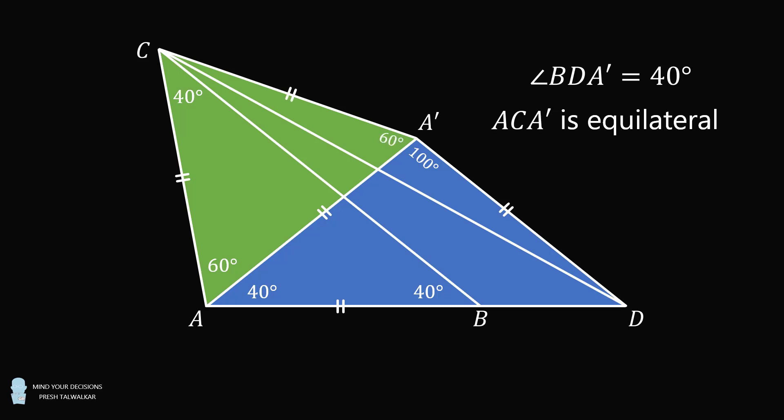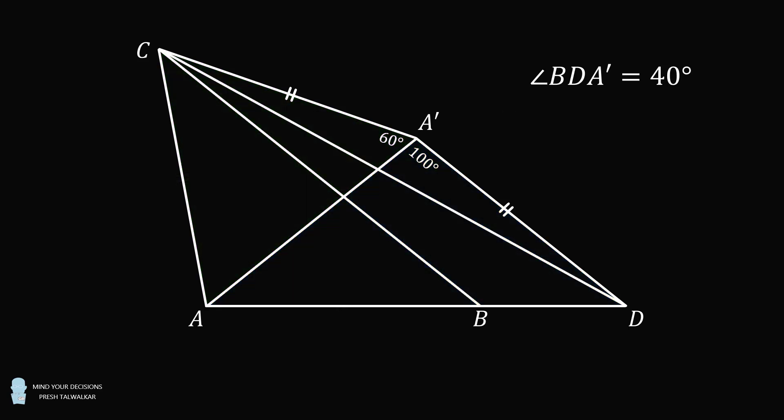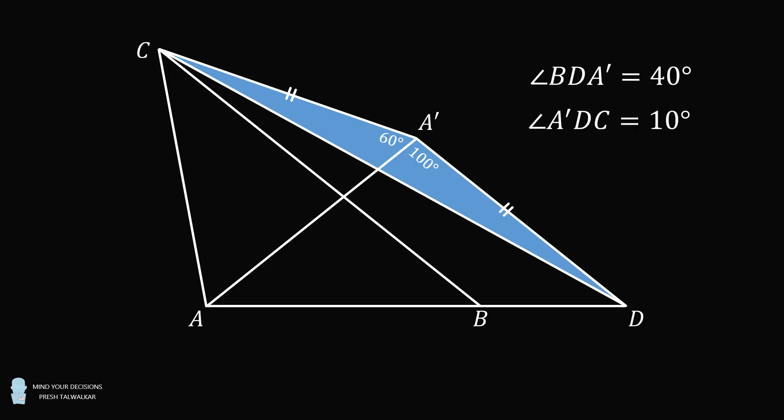From here, let's focus on triangle CA'D. CA' is equal to A'D. So we have an isosceles triangle, and its vertex angle is equal to 160 degrees. So each of the other two angles will be equal to 10 degrees each.